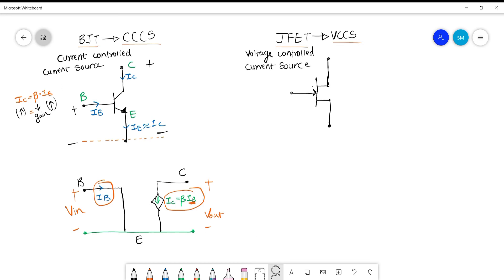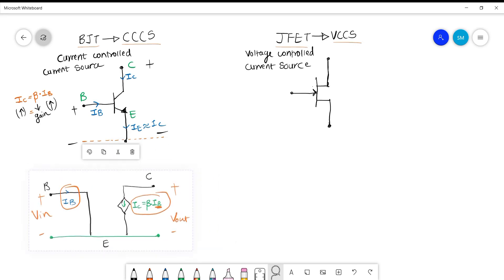Now we will move to the JFET. In JFET, the basic working is that we are supplying some negative voltage to the gate, so we are giving VGS. By varying VGS, we are controlling our output current ID. In short, we can say that ID is directly proportional to VGS. Now we will see the model of JFET.